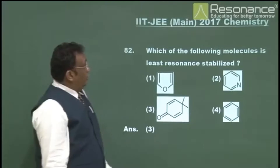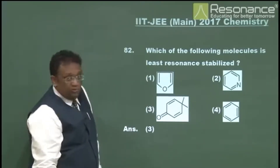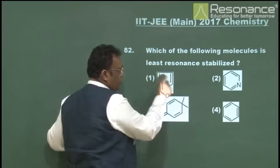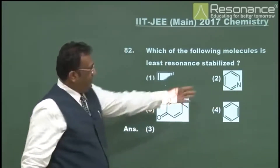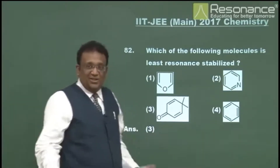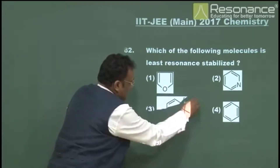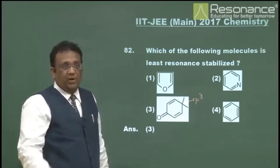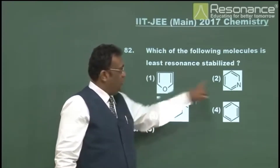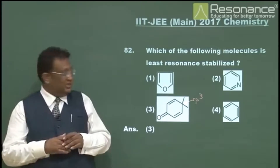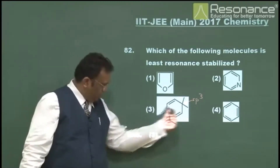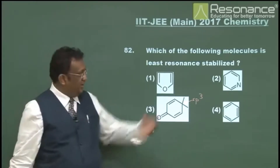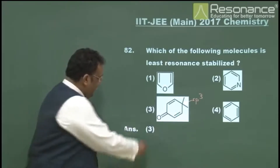Question 82: which of the following molecules is least resonance stabilized? Furan is aromatic due to its lone pair of electrons; pyridine is aromatic; benzene is obviously aromatic. But compound 3 has an sp3 hybrid carbon which cannot participate in conjugation — it's non-aromatic. Options 1, 2, and 4 have excellent resonance energies, while 3 has only general conjugation, far inferior to aromaticity. The answer is 3.